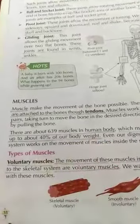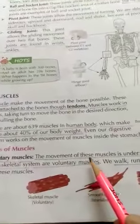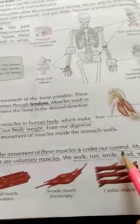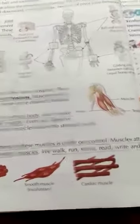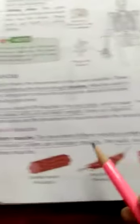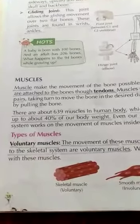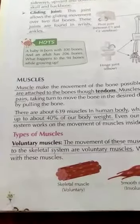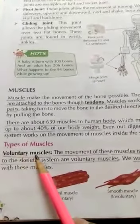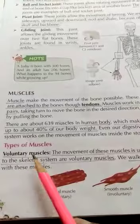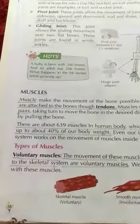Now let us come to the types of muscles. First is voluntary muscles. The movement of these muscles is under our control. Muscles attached to the skeletal system are voluntary muscles. With the help of voluntary muscles, we can work, run, smile, read, ride, and move.